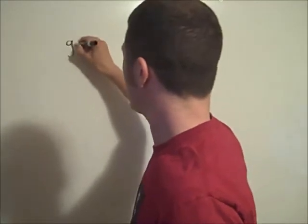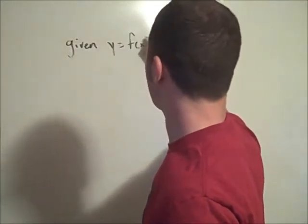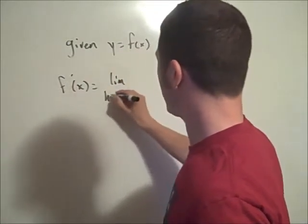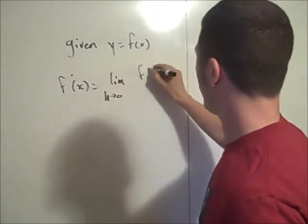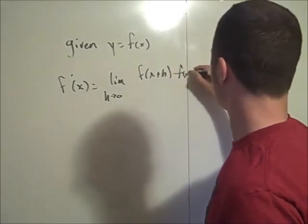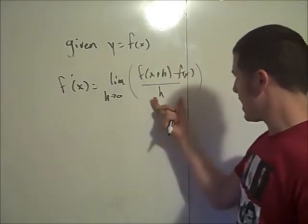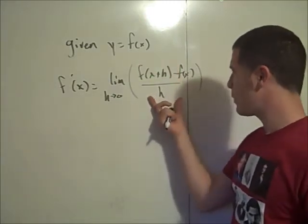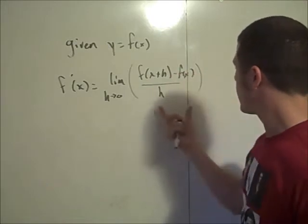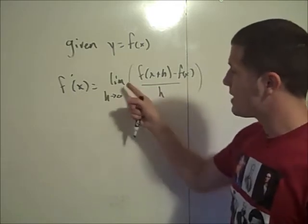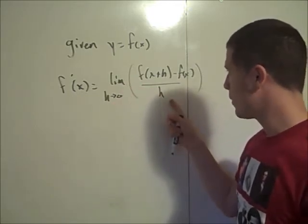Let's think about the definition of a derivative. Given y equals f of x, some function, its derivative f prime of x is the limit as h goes to 0 of f of x plus h minus f of x, all over h. This argument of the limit is called the difference quotient — I have another tutorial on how to compute these. So the derivative is the limit as h goes to 0 of its difference quotient.